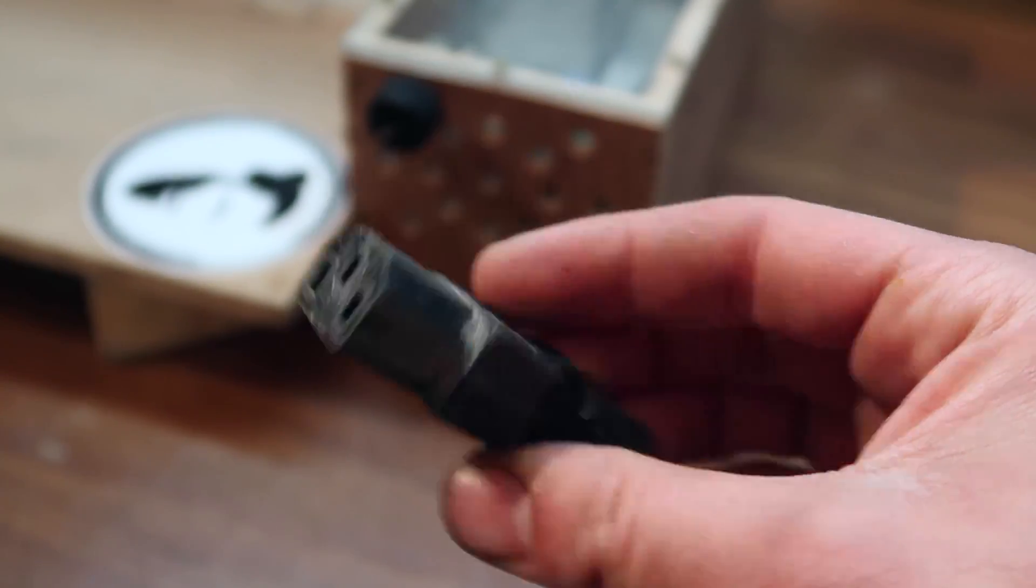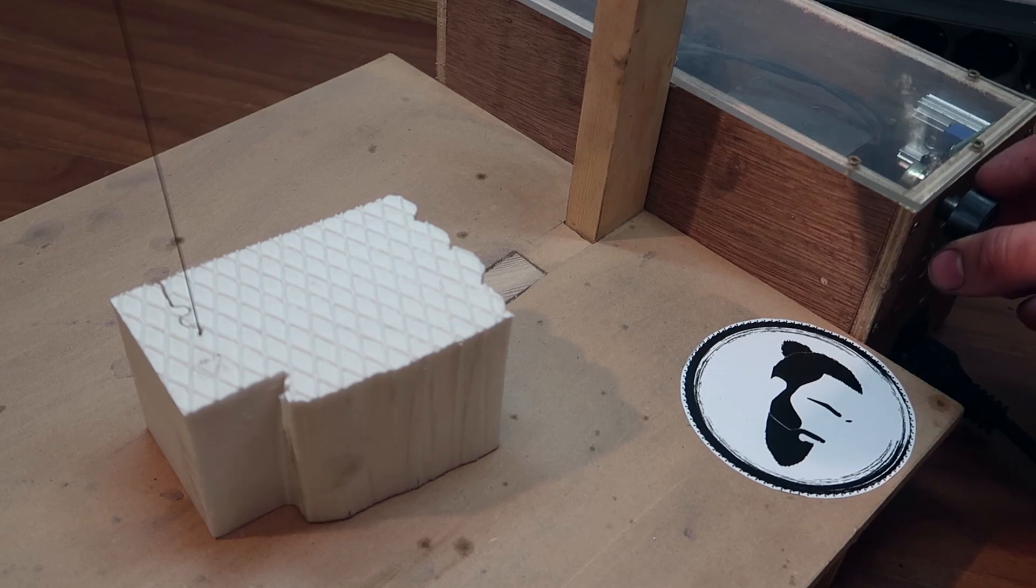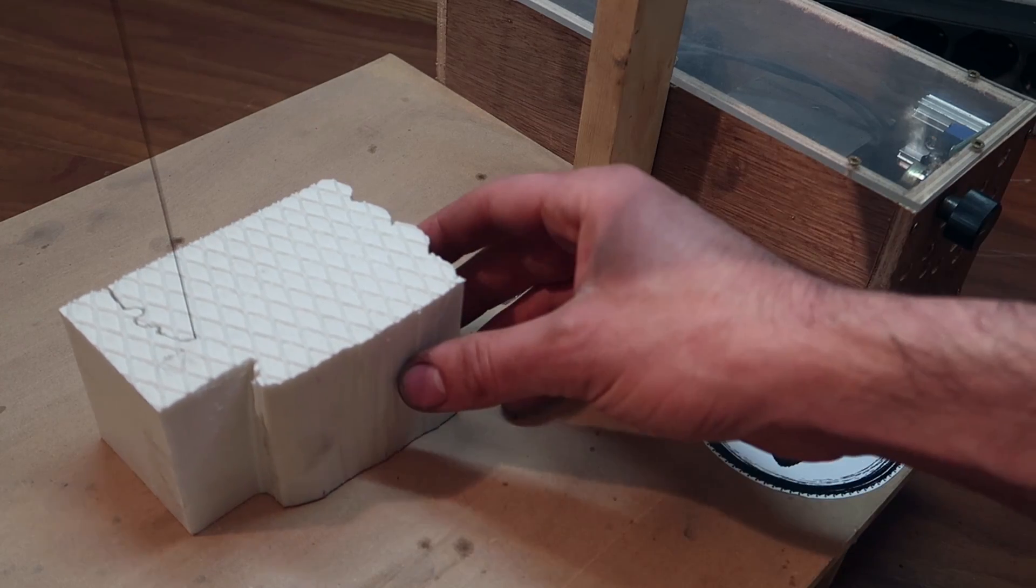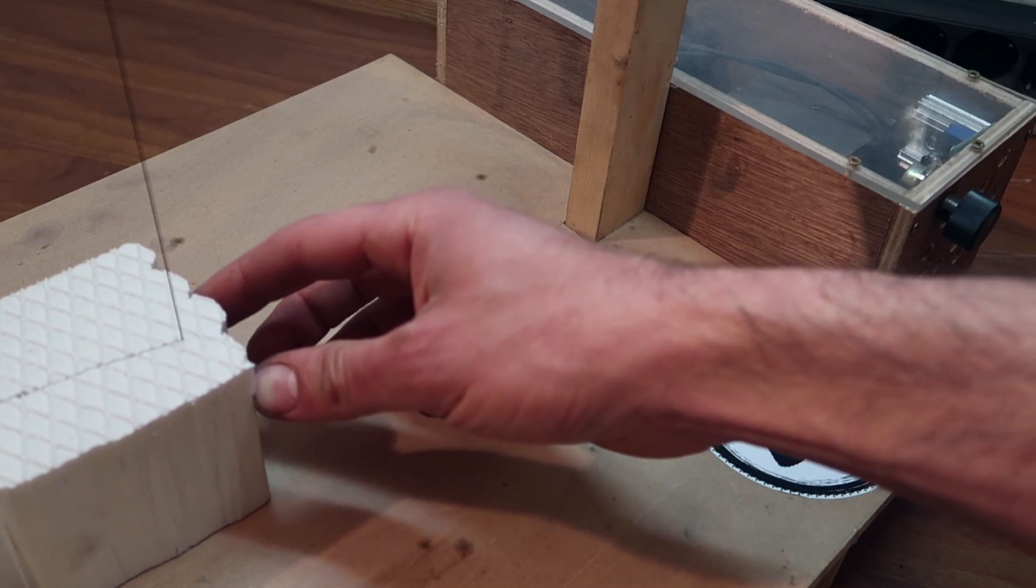To connect it to the mains voltage I use these power supply plugs that are very handy if used on many tools. The wire heats up depending on the position of the dimmer's knob. The hotter it gets, the faster it cuts through foam.